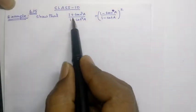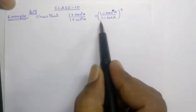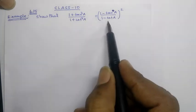Example 6.15. Show that 1 plus tan square A divided by 1 plus cot square A is equal to 1 minus tan A by 1 minus cot A, whole square.